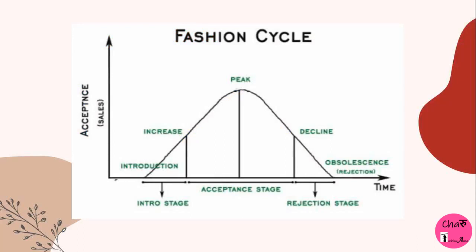As we can see in this graph, the two axes represent acceptance and time. Time is proportional to acceptance. There are three phases: introductory, acceptance, and rejection.